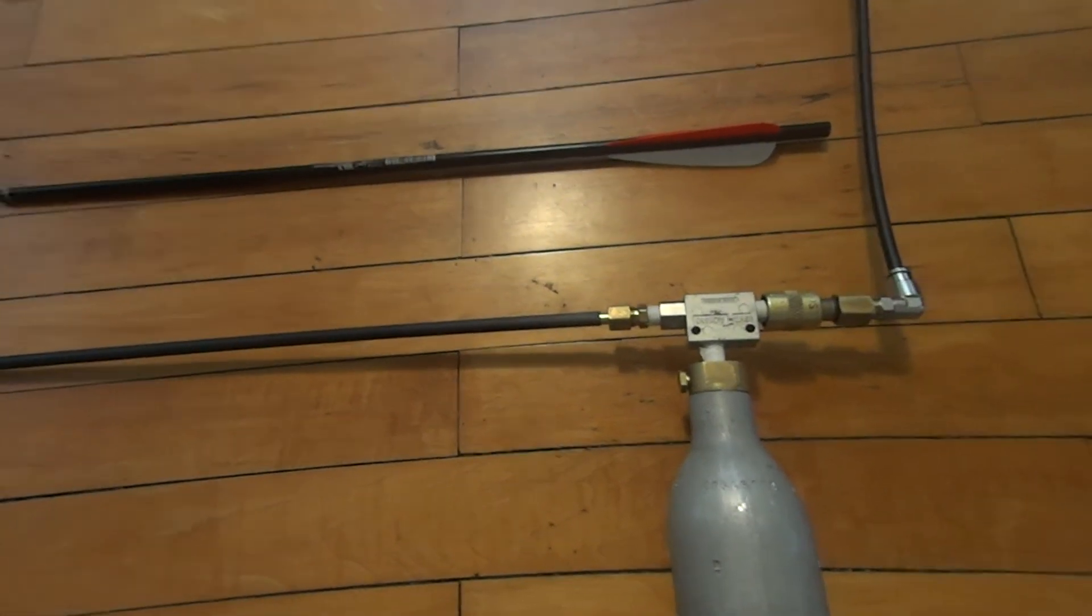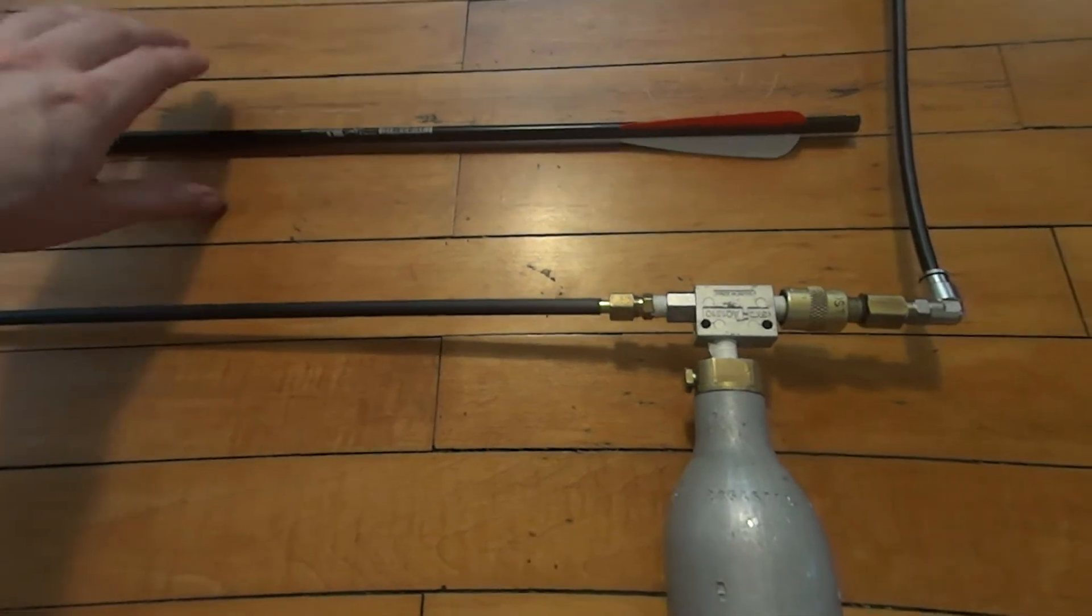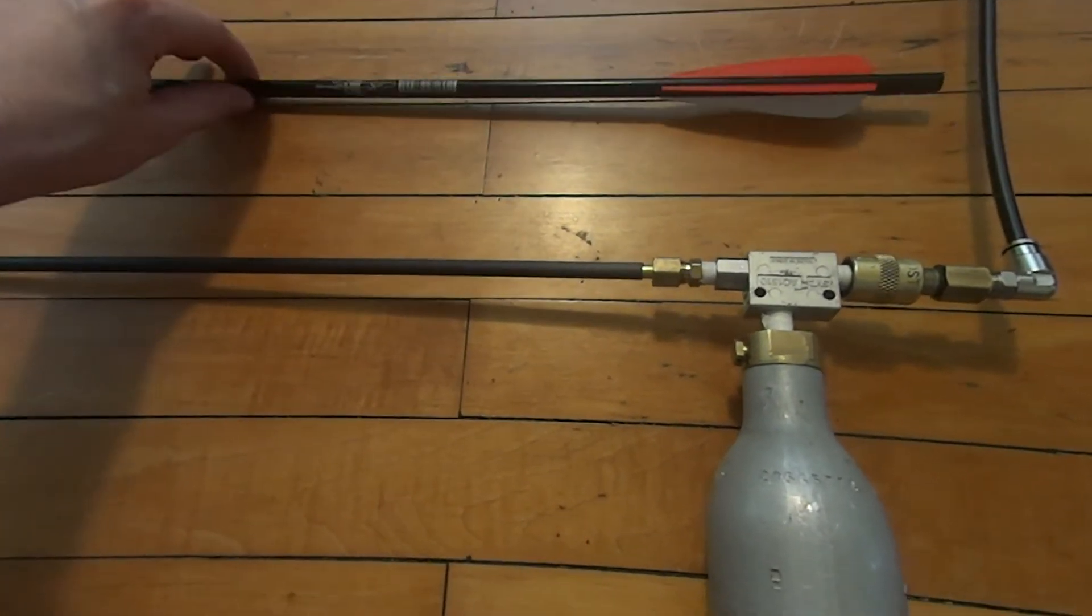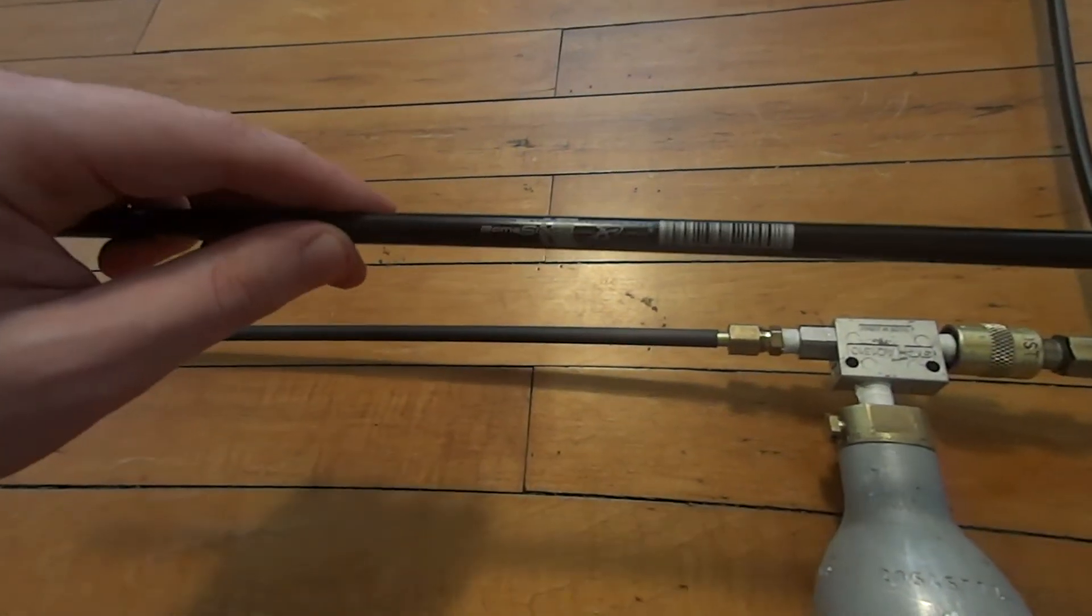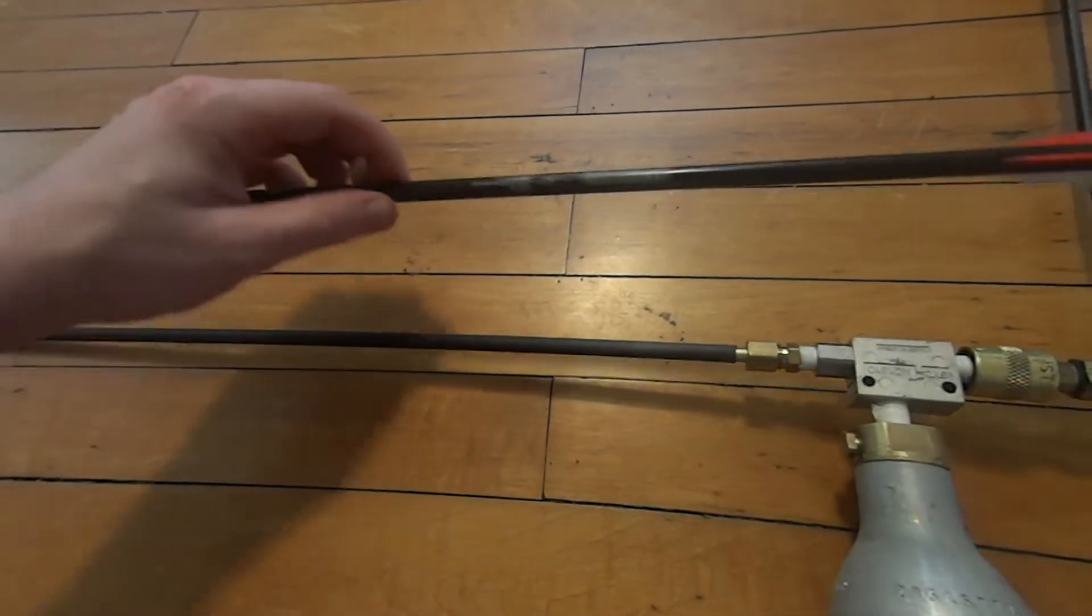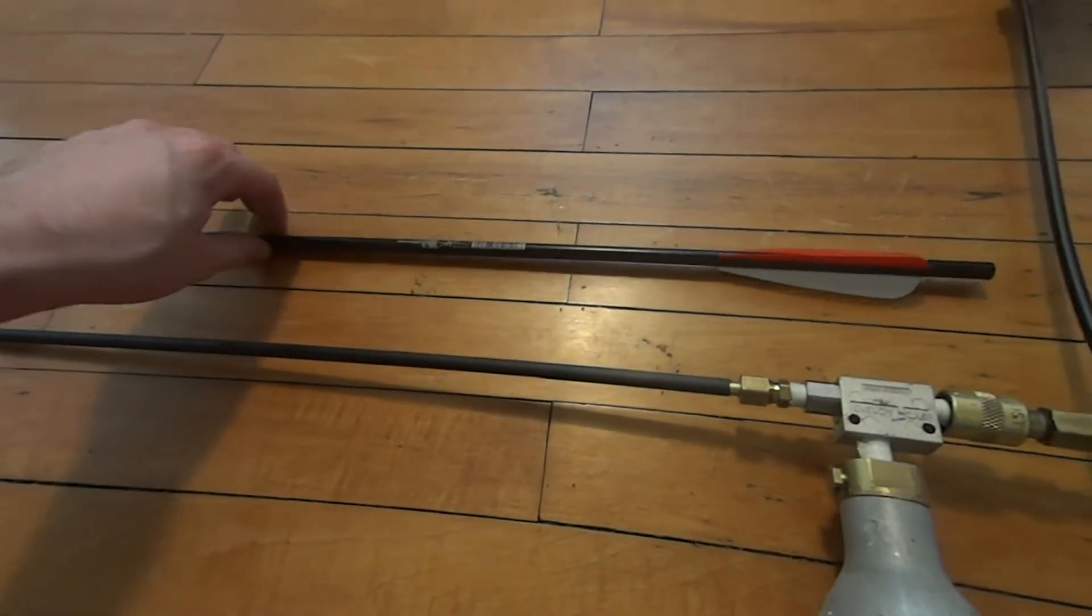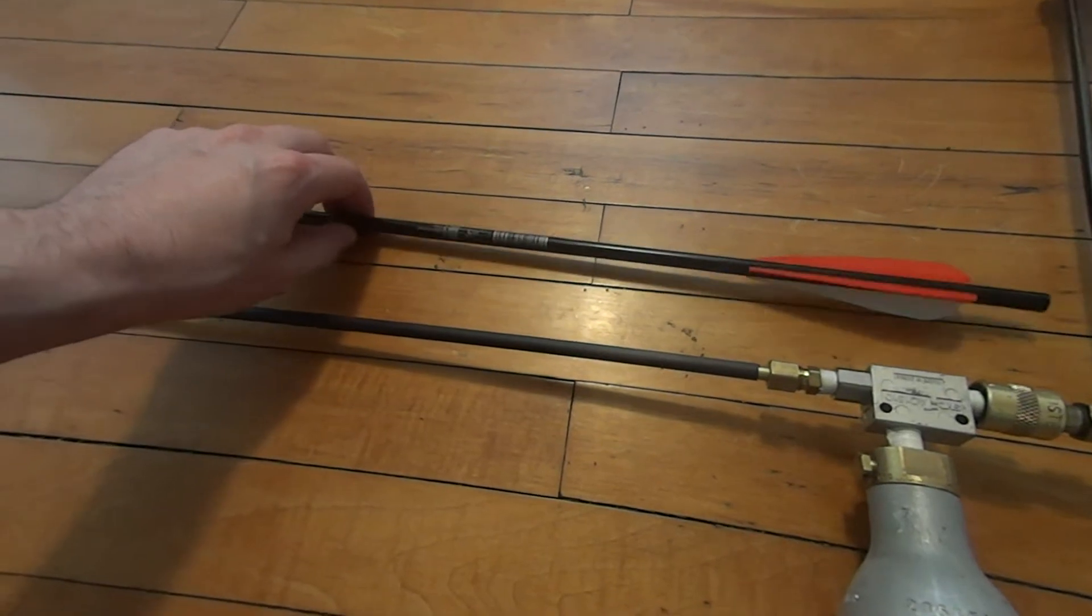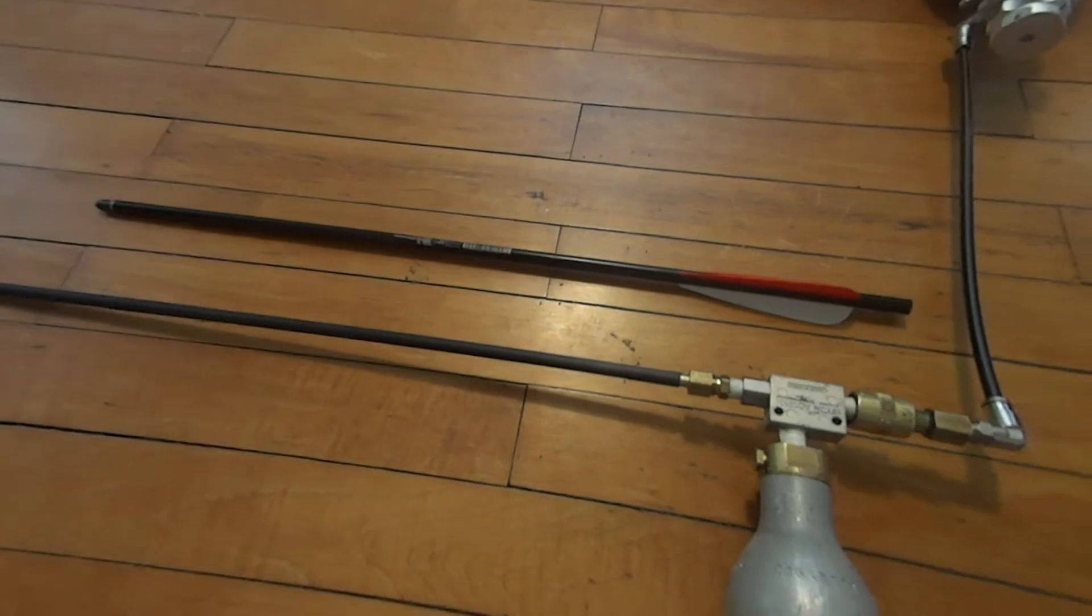So I'll start with the arrow. I'm going to go over what exactly this arrow is in case you're looking to replicate this setup. This is a Carbon Express Game Slayer. Although the company is Carbon Express, this is an aluminum arrow. I bought this from Mills Fleet Farm. I'm sure you can find them on Amazon and a couple other places as well.